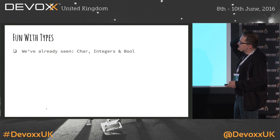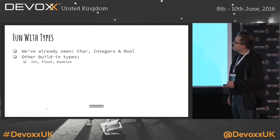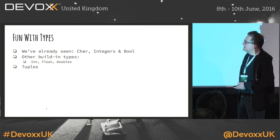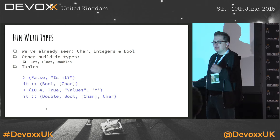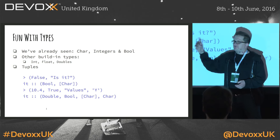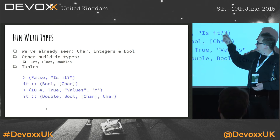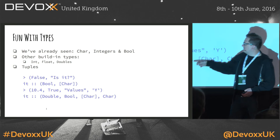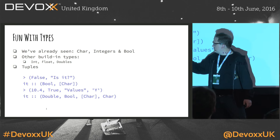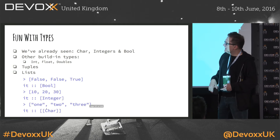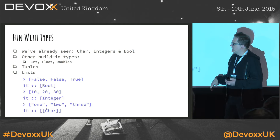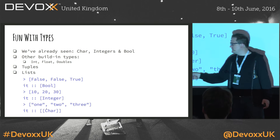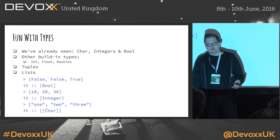So we've already seen some types — char, integers, booleans, and others built in. We can also create tuples with ease. Creating a tuple is easy — just put parentheses and provide your values. So 'false' and some string gives you a tuple of a bool and a list of chars. It'll be a double, boolean, char if you provide a floating point number, true, and some char. There are also lists, which always contain elements of the same type. You can only create a list of booleans, or a list of integers, or a list of strings — not a list containing a boolean and a string.